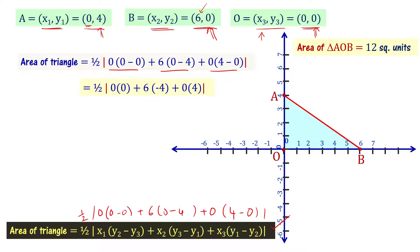So, we can further simplify and write it as half times modulus of minus 24. The modulus operator: for example, minus 24, modulus of minus 24 is equal to 24.